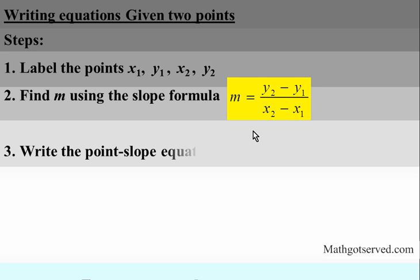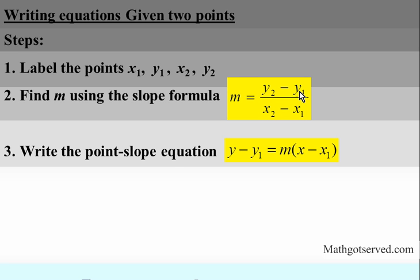After finding the slope using the slope formula, we're going to write a point-slope equation. The point-slope equation is y minus y1 equals m times x minus x1. It's a derivative of the slope formula — we just fixed y2 and x2 as variables y and x, and allow the subscripted coordinates to float based on whatever our points are. This is another important reason why we label our coordinates, so we don't make mistakes when substituting y1 and x1.